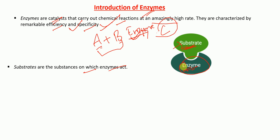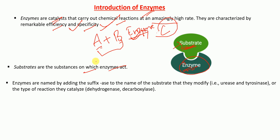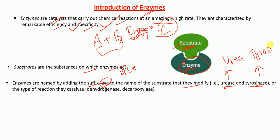Now let's talk about how different enzymes are named. Enzymes are named by adding the suffix '-ase' to the name of the substrate they modify. For example, urease acts on the substrate urea, and tyrosinase acts on the substrate tyrosine. So enzymes can be named by adding the suffix '-ase' to the name of the substrate they modify.